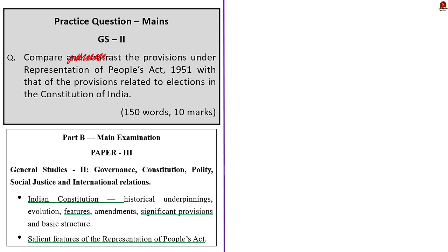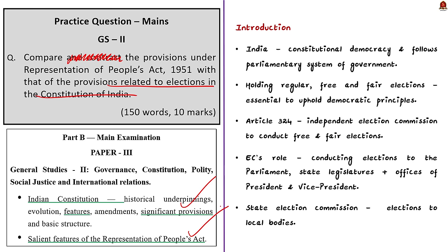The question is: Compare the provisions in the Representation of People's Act 1951 with the provisions related to elections in the Constitution of India. This can be asked in GS Paper 2 under Indian constitution features and the salient features of the RPA. For the introduction, you can write: India is a constitutional democracy following a parliamentary system of government, so holding regular free and fair elections is essential. Article 324 of the Indian Constitution provides for an independent Election Commission. The Commission conducts elections to Parliament, state legislatures, and the offices of President and Vice President, while a State Election Commission conducts elections to local bodies.